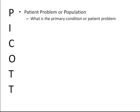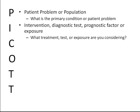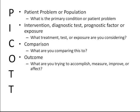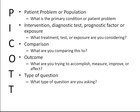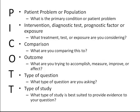P is for the patient, problem, or population. I is for intervention, diagnostic test, prognostic factor, or exposure. C is for comparison. O is for outcome. The first T is for the type of question you're asking, and the second T is for the type of study that would be best suited to provide evidence to your question.